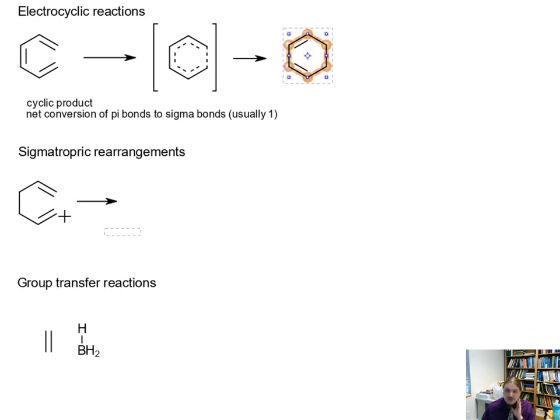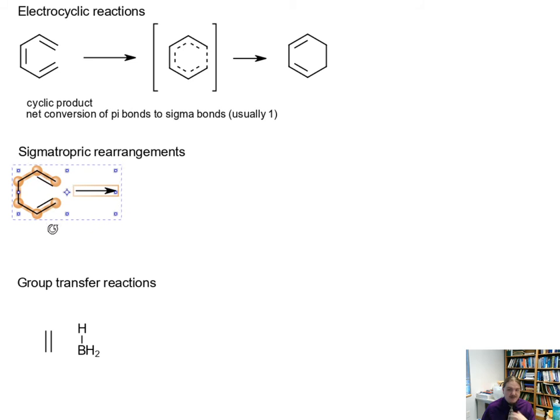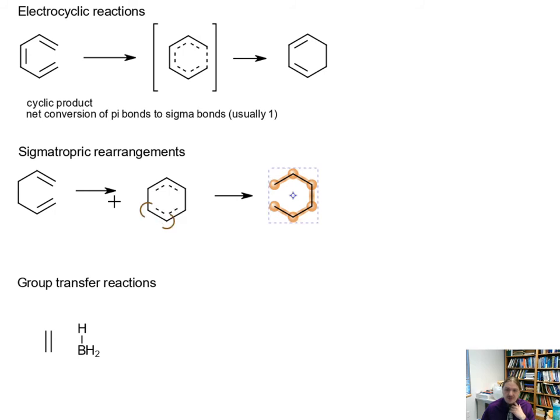Sigmatropic rearrangements don't create rings. They don't convert pi bonds into sigma bonds. Instead, they just rearrange the sigma and pi bonding in the structure.